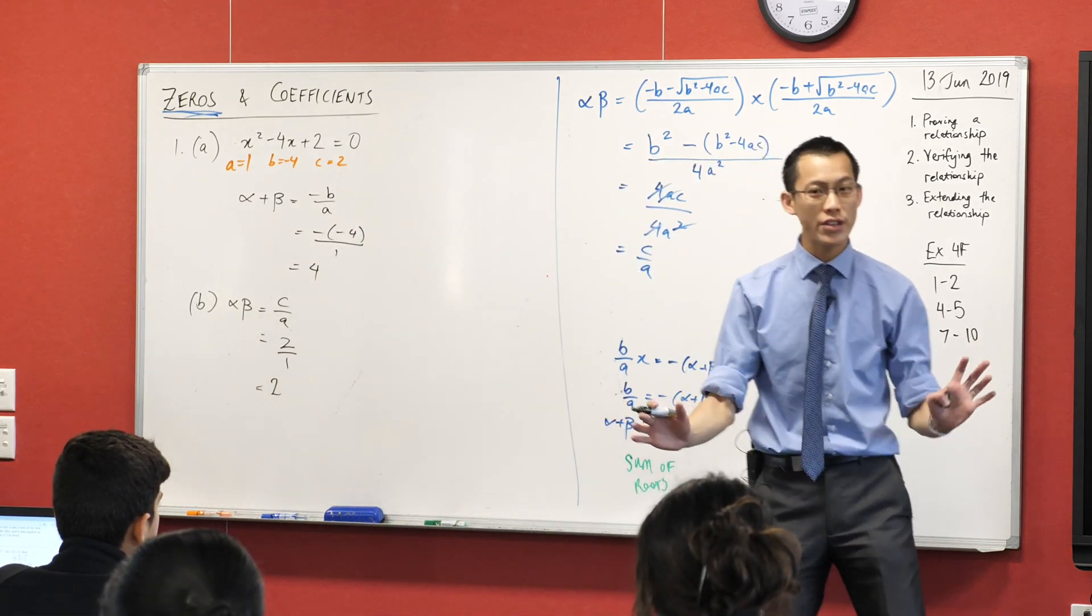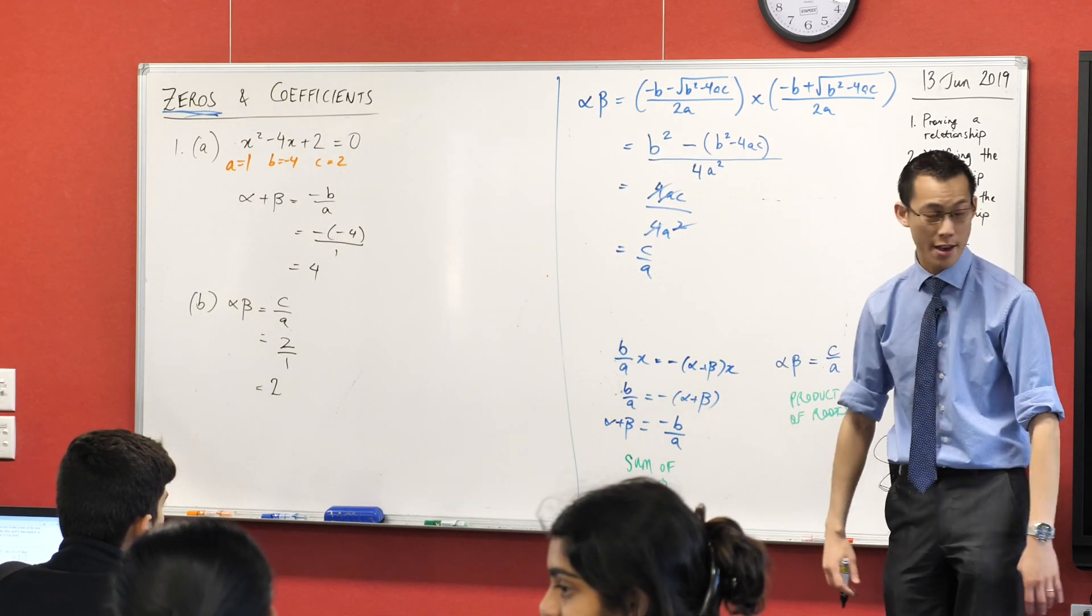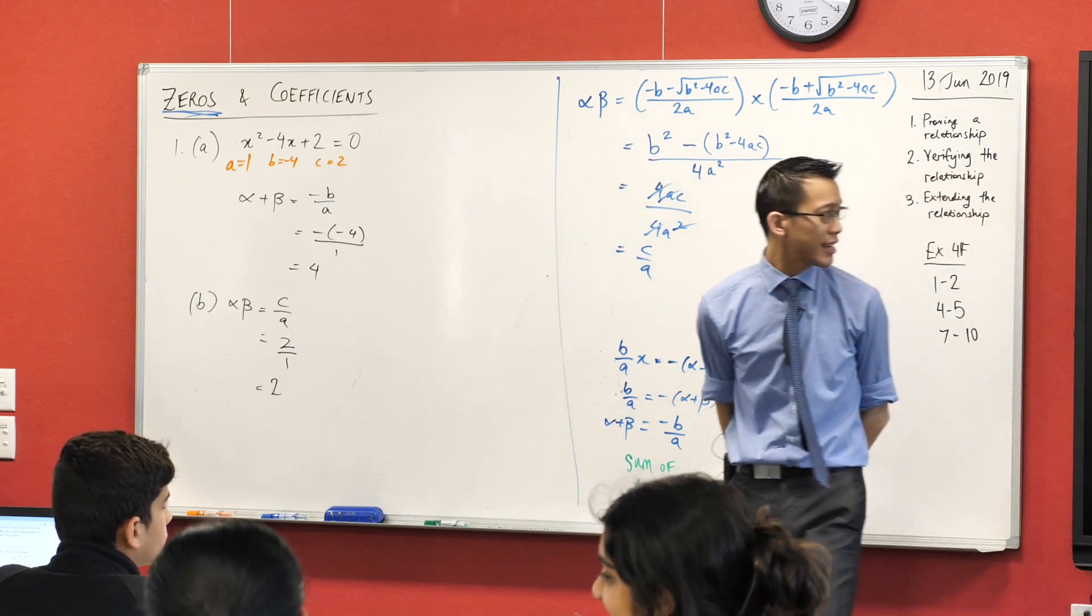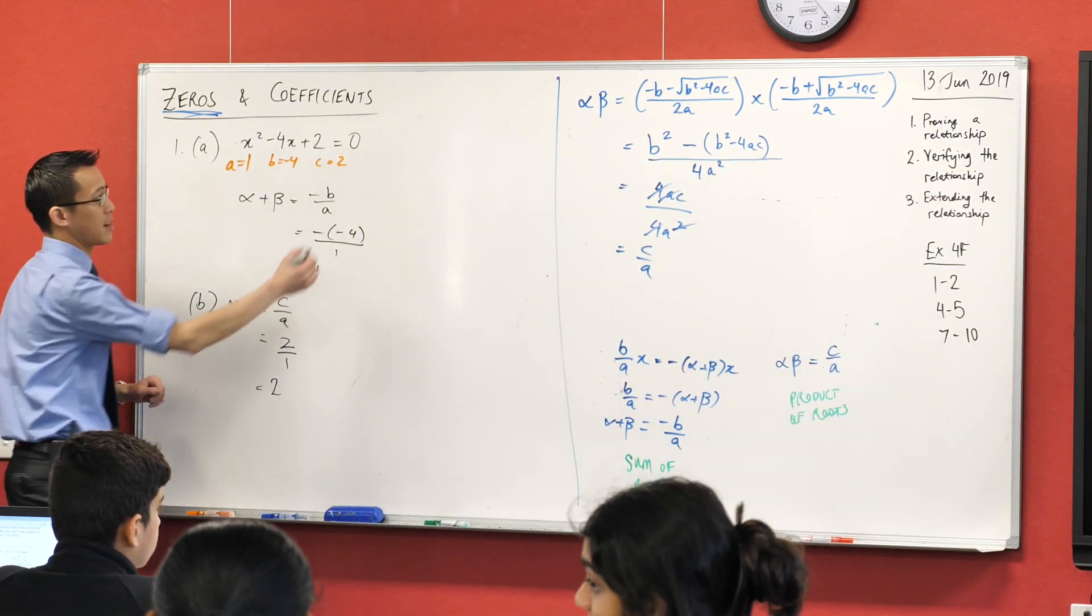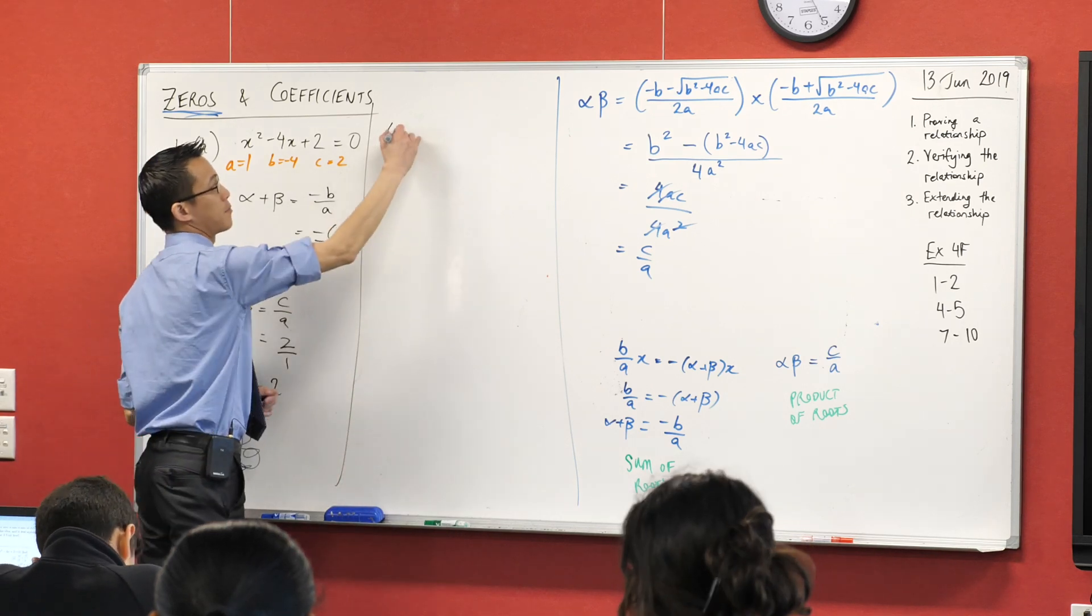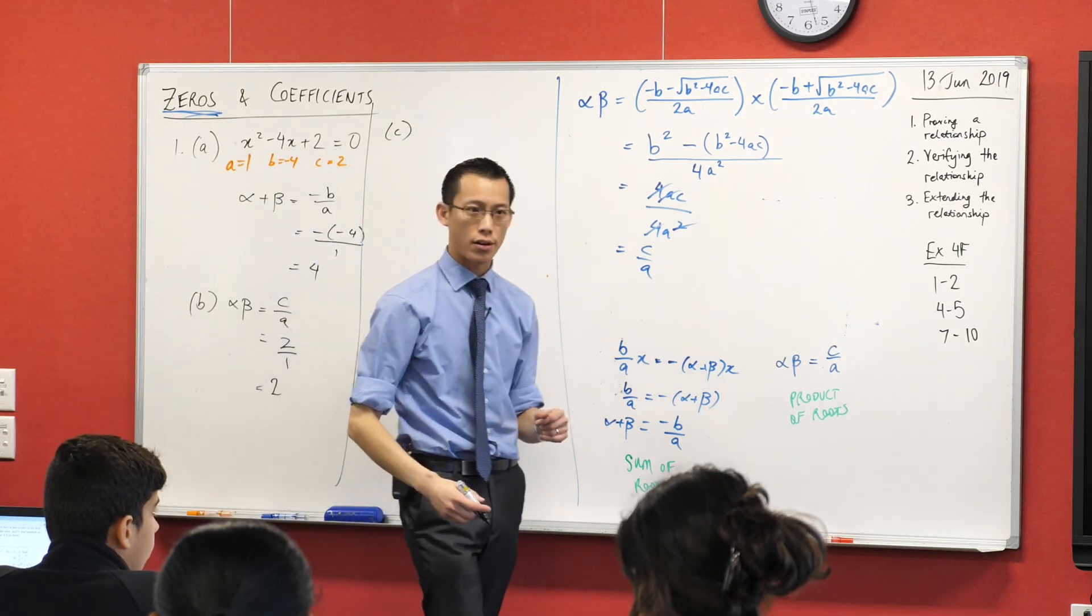Again, no factorization. No quadratic formula. I just went straight there. Where it starts to get a little more interesting is when you look at something like C. I'm just going to put an extra column here. What's C asking for? Have a look at it.